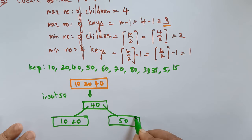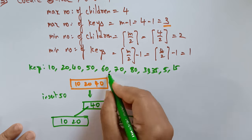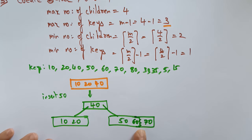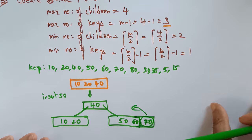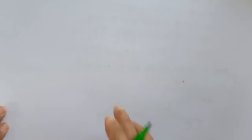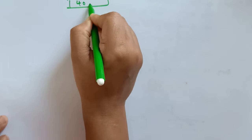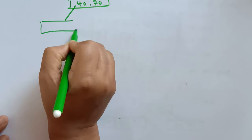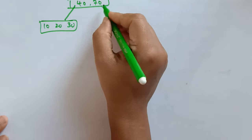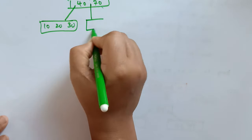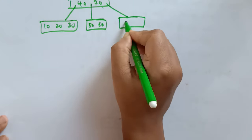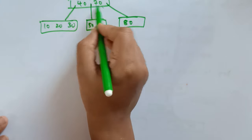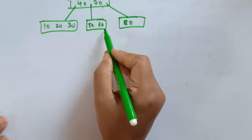Now I want to insert 60. I can insert it on the right-hand side where there is space. I can also insert 70. Now I want to insert 80, but there is no space — my node is already filled. So I have to split. Send the 70 up. Now the new root node has 40 and 70. The left side has 10, 20; the middle has 50, 60; and the right side has 80. Each node can place up to 3 keys and have 4 children.